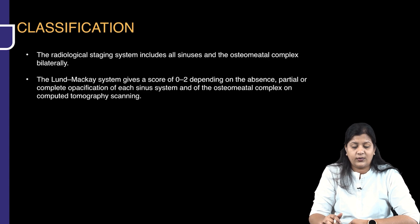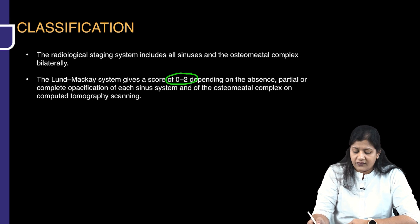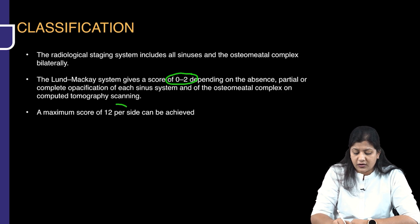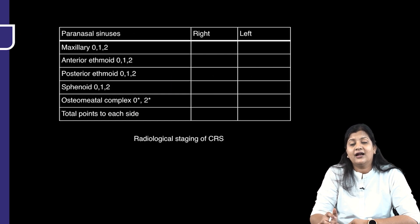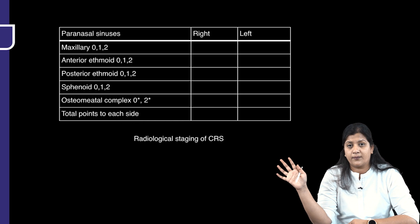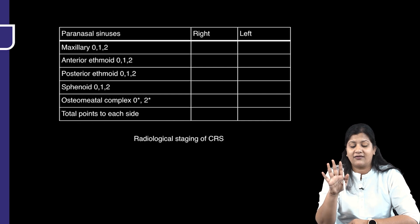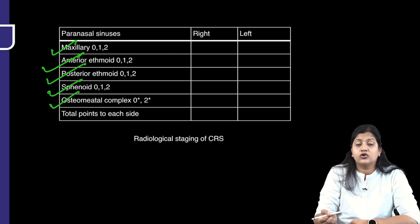We also have a radiological scoring system — the Lund and McKay scoring — where each parameter is scored 0 to 2: zero is no opacification, one is mild or partial opacification, and two is complete opacification. A maximum score of 12 can be obtained on each side. The sinuses scored are maxillary, frontal, anterior ethmoid, posterior ethmoid, sphenoid, and the osteomeatal complex. Right and left sides are scored separately.